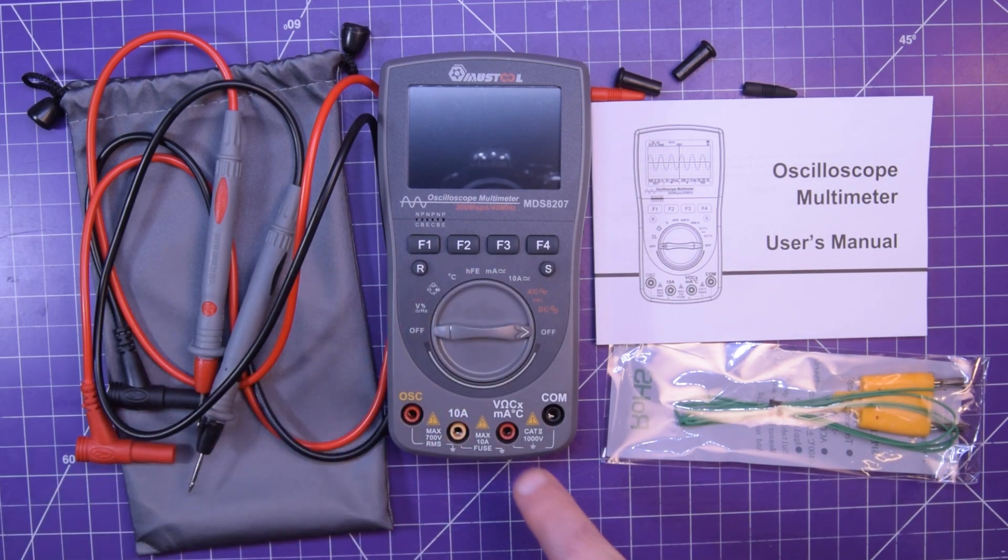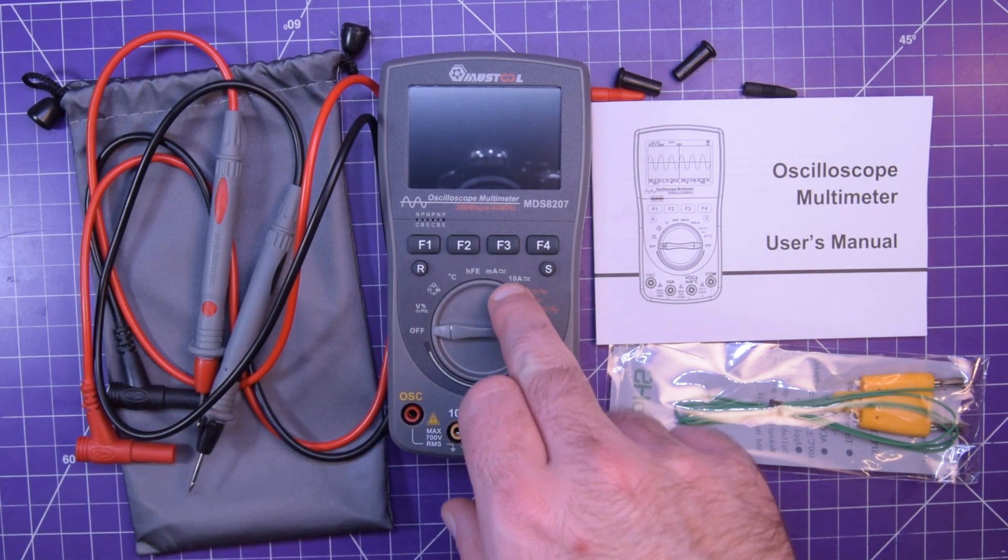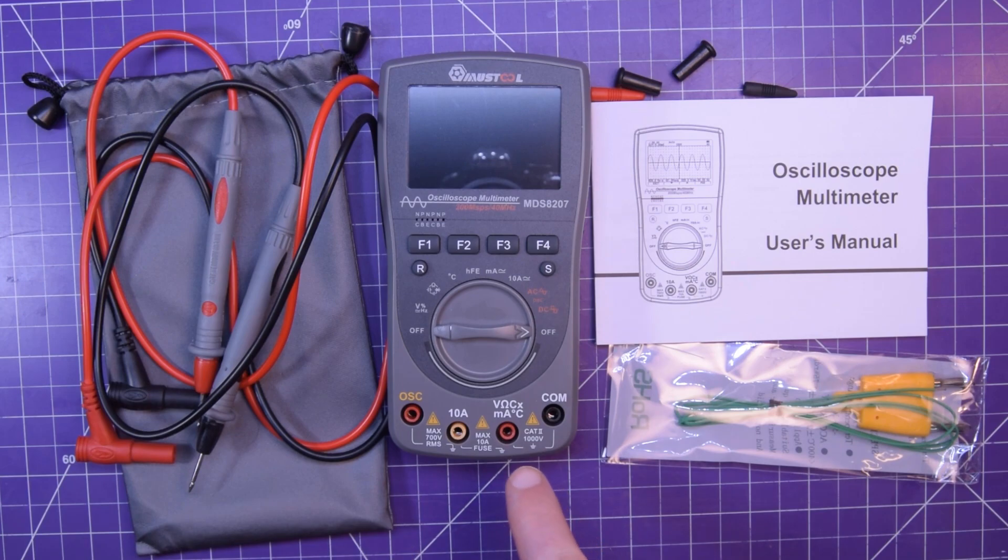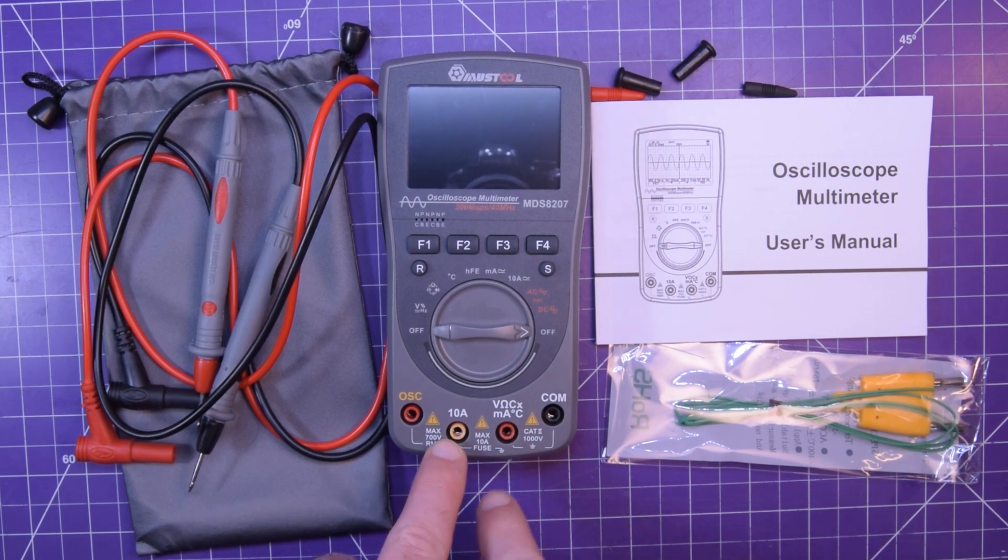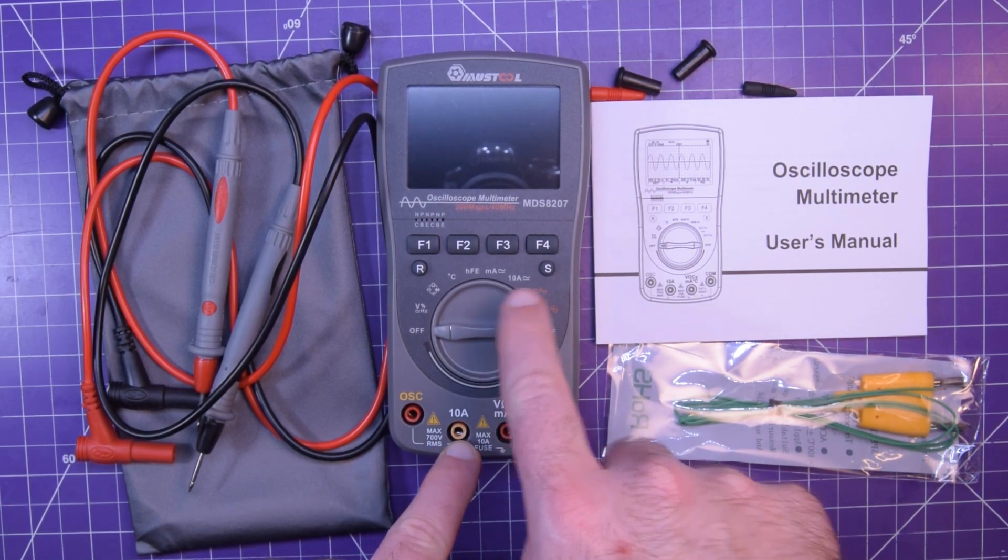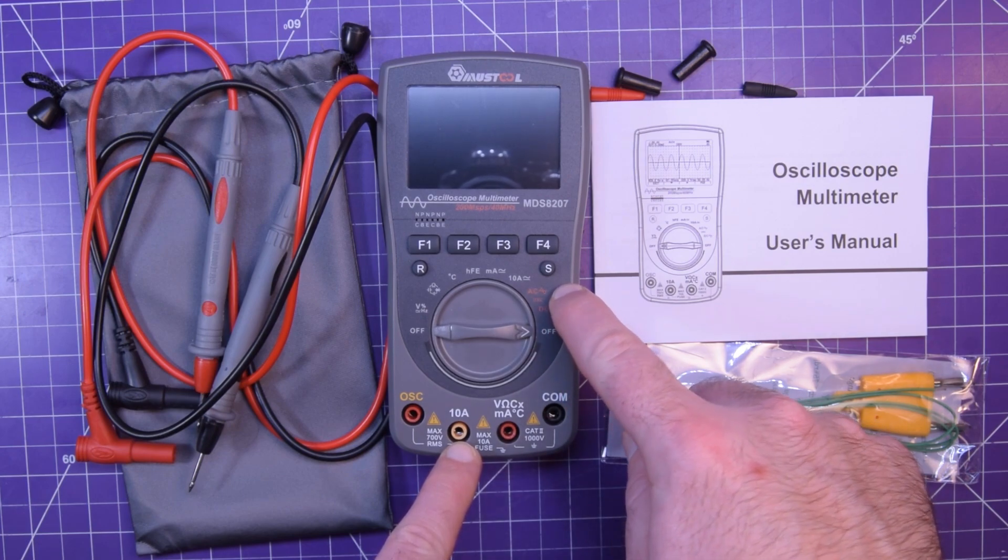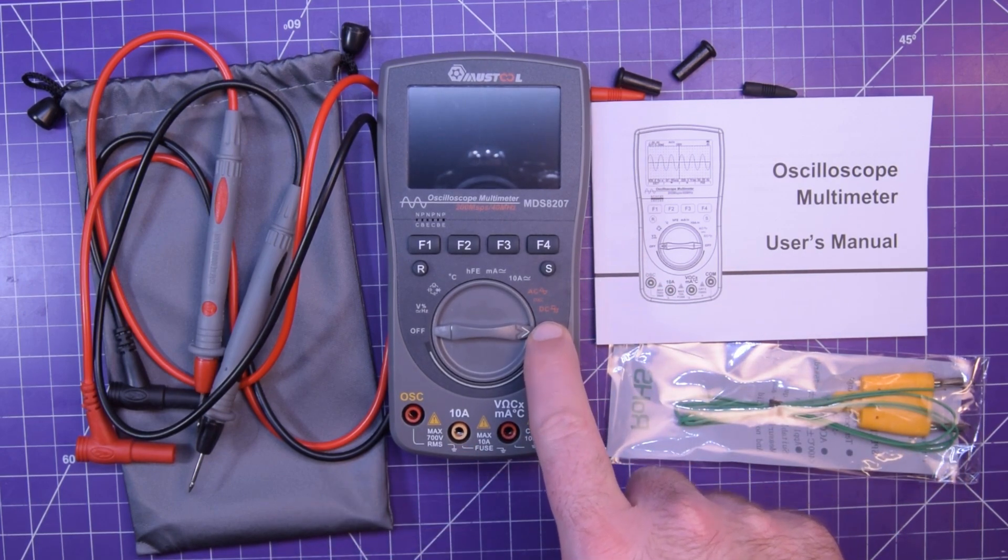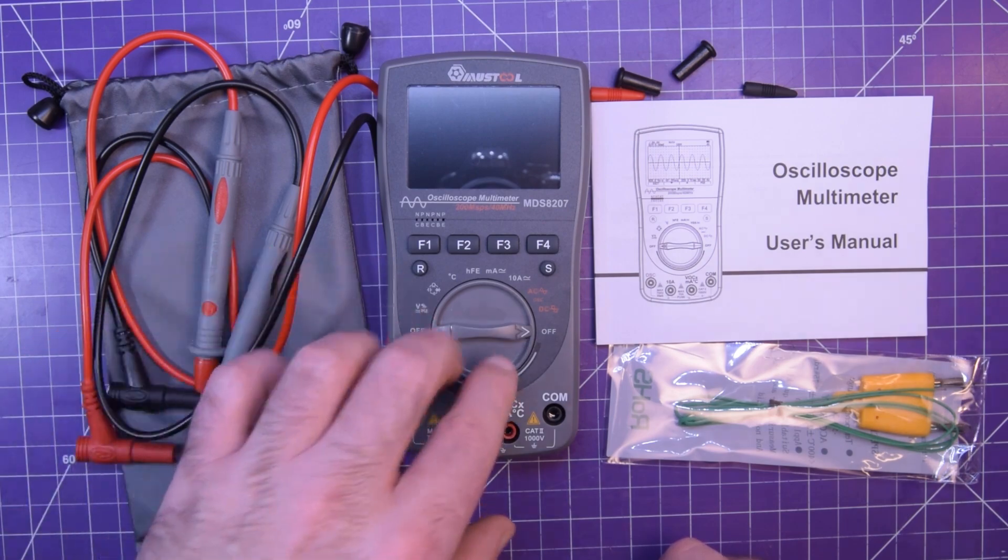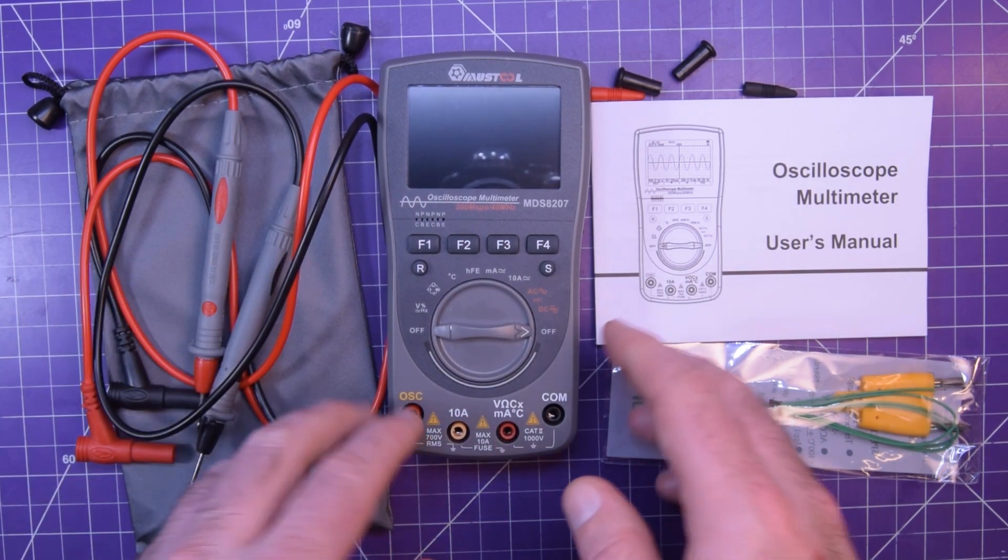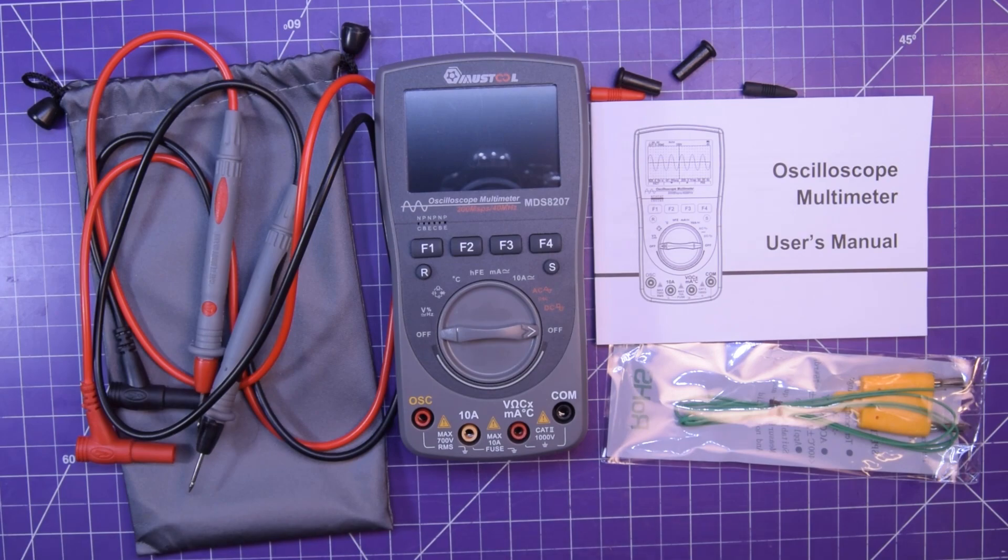A milliamp range and an amp range that's AC and DC and you've got separate holes for them. And then here you have the AC coupled oscilloscope and the DC coupled oscilloscope features and they have their own hole as well. So it's like you have a little oscilloscope in here.